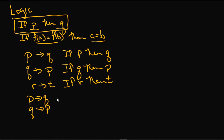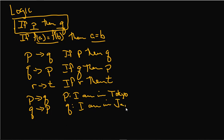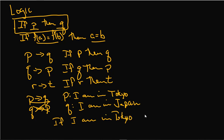Is there a relationship? Are they logically the same — do they mean the same thing? Let's think about it. Let's suppose we say P is 'I am in Tokyo' and Q is 'I am in Japan.' So what does if P then Q say? If I am in Tokyo, then I am in Japan. Let's just write it out.